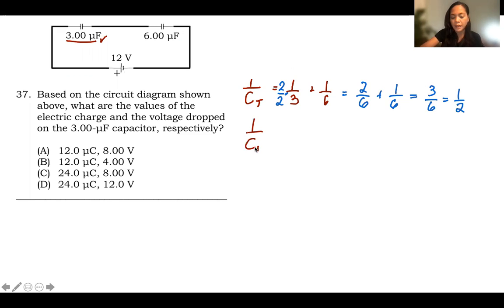So 1 over C total is equal to one half. Therefore, the total capacitance is just 2, the reciprocal, because this is in the denominator.